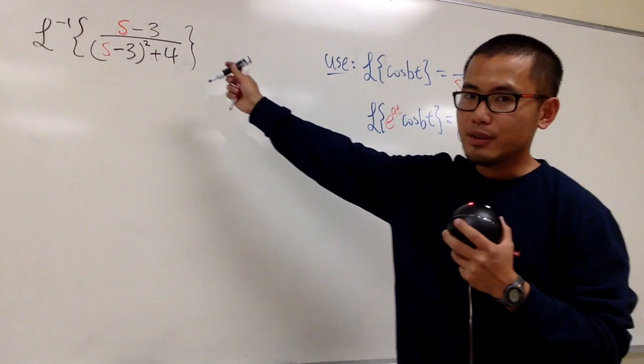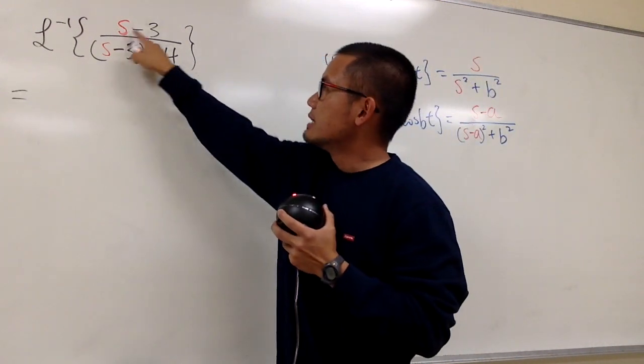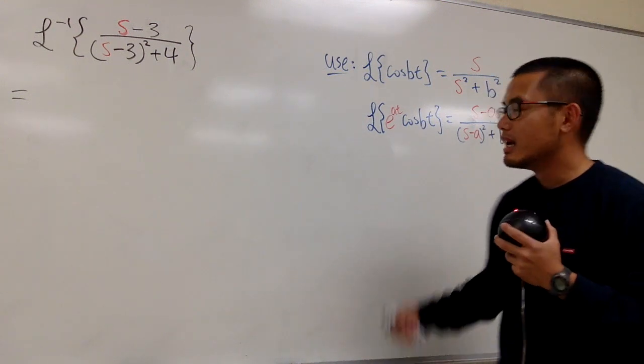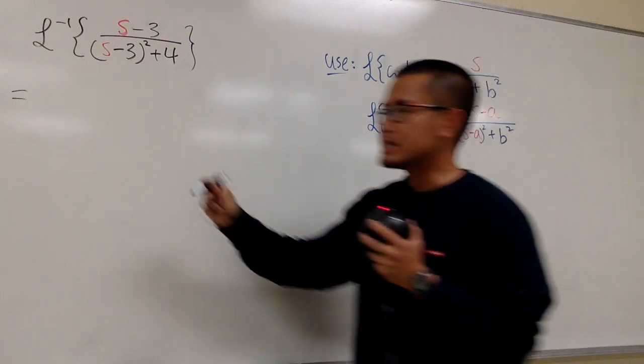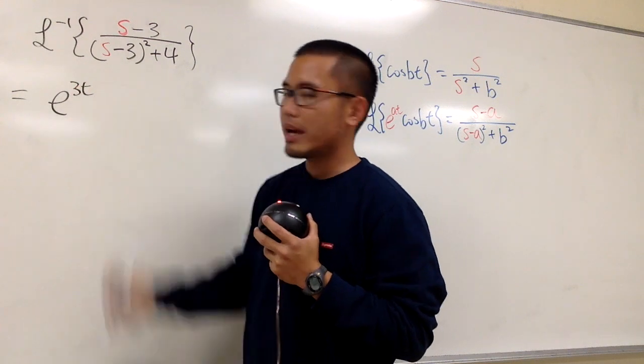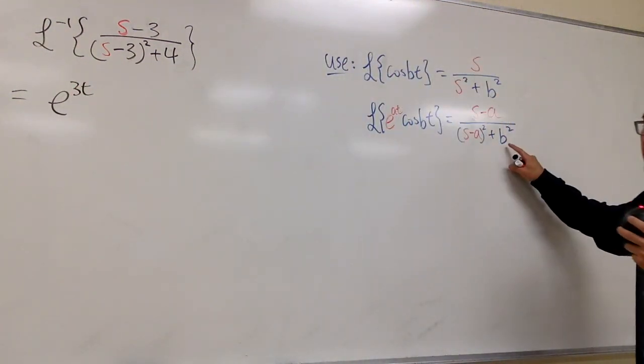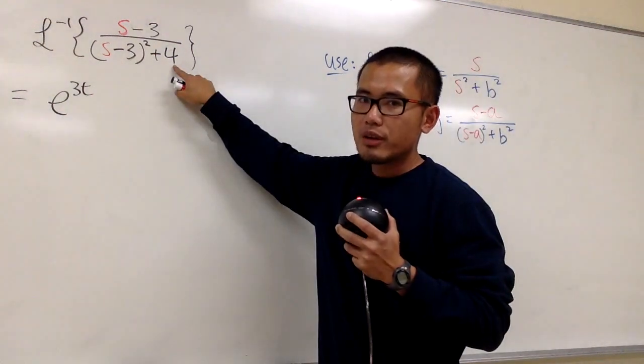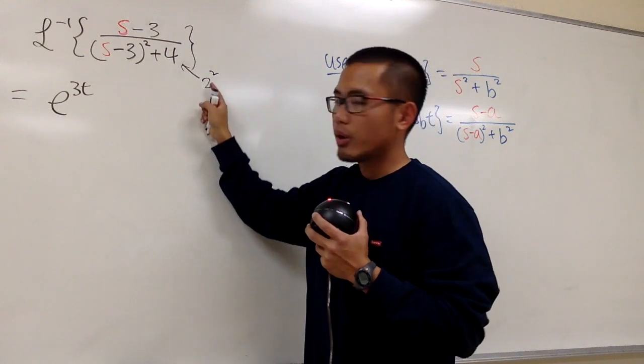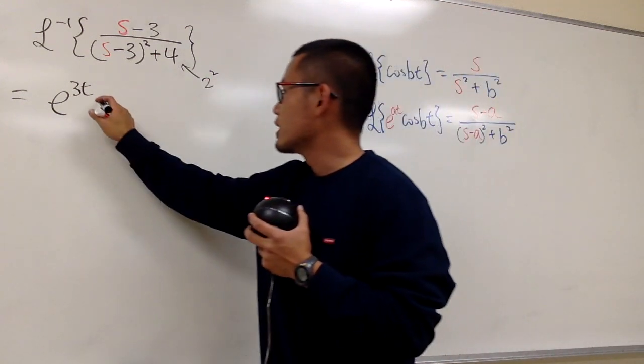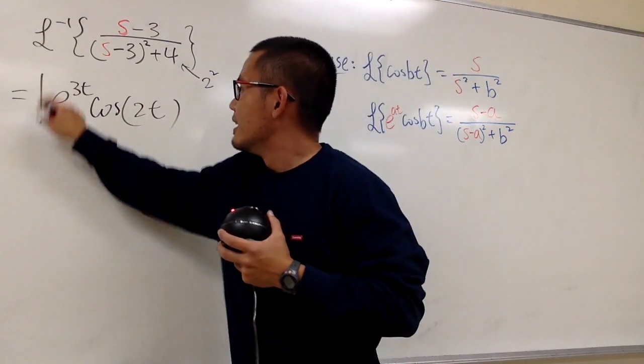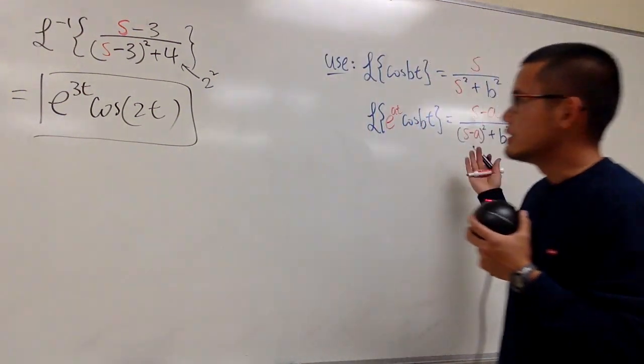Now I can finish this up for you. We have s minus 3, s minus 3, so that tells me a equals positive 3. Looking at this backwards, we must have e to the at, and a equals 3, so we have 3t right here. Also, we have to look at b squared. We have 4 right here—2 squared. And this 2 will give you cosine of 2t. So we multiply by cosine of 2t. That's it.